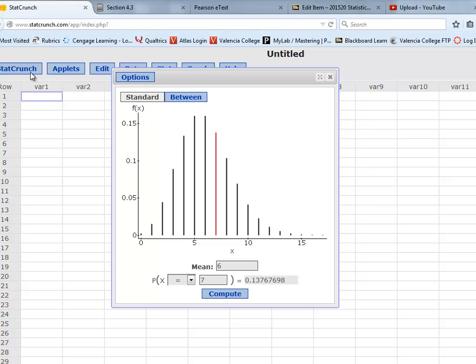You also notice that it gives the distribution for the entire Poisson random variable when the mean is 6. And it's highlighting in red the value that we have found, that probability, and gives us that numerical value.